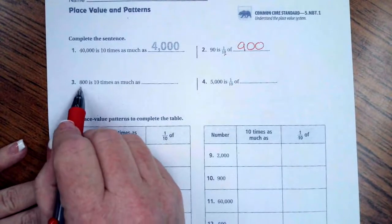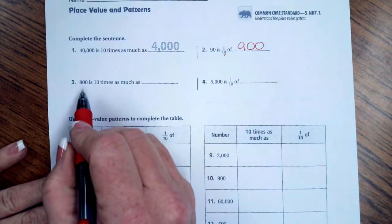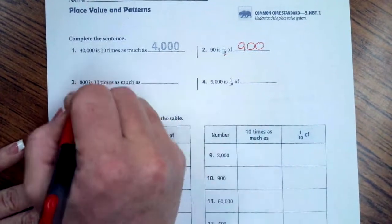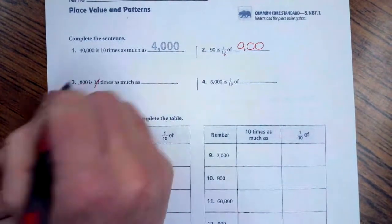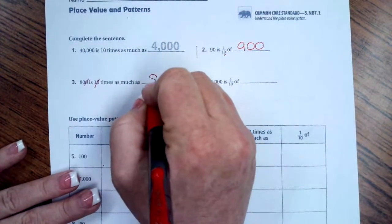Number 3, 800 is 10 times as much as, so it's saying that 800 is 10 times bigger than what? 10 again has one zero, so I'm going to cross off one zero, and then I have 80.